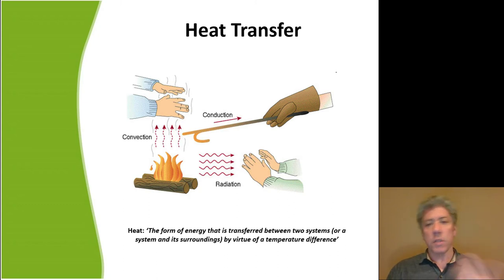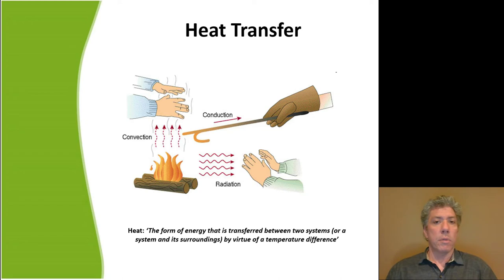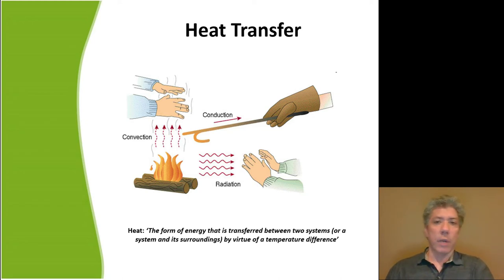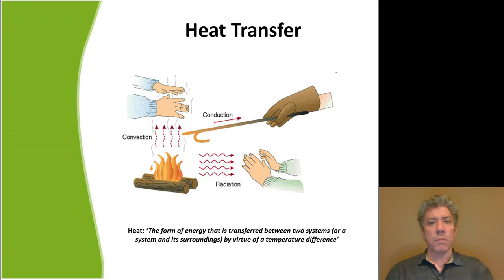You'll get different signals from your two hands suggesting two different temperatures in the bowl when in fact there is only one. The reason is that you're actually more sensitive to the rate of heat transfer than you are to temperatures. This is where the idea comes from that you could put a frog in a pan of water and very slowly turn up the heat, and the frog wouldn't be sensitive to the temperature itself, just the rate of heat transfer.